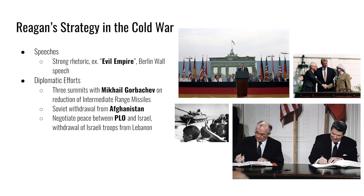Reagan and Gorbachev held three summits to reduce intermediate-range missiles and negotiate the Soviet withdrawal from Afghanistan. That invasion of Afghanistan was the reason Jimmy Carter had pulled out of the SALT II Treaty and why the United States boycotted the 1980 Moscow Olympics. Reagan's diplomatic efforts also included negotiating peace talks between US allies and long-standing enemies, reducing the risk of proxy wars. For example, his administration facilitated talks between Israel and the PLO after Israel fought a war against the PLO in 1982, which was leading guerrilla attacks from Lebanon. Reagan helped negotiate a ceasefire and Israeli troop withdrawal, helping both sides engage in future peace talks, though issues between them continue to the present day.